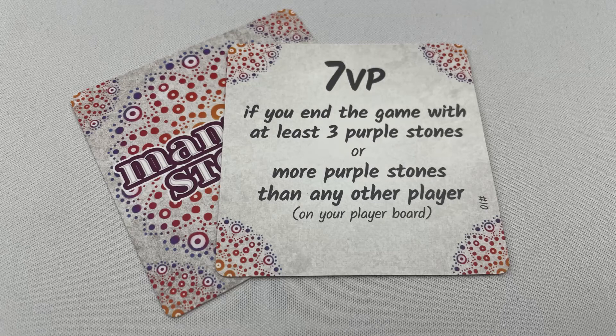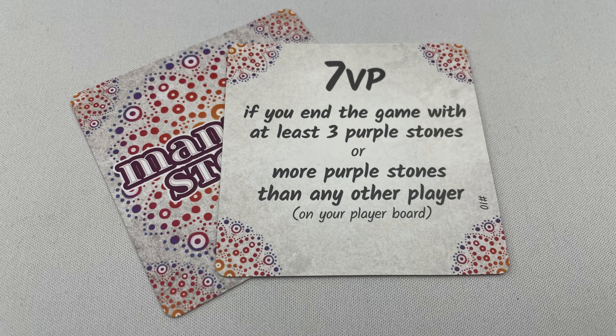Then, in turn order, players reveal and score one objective card. A player could score either of their assigned objectives, but not both.